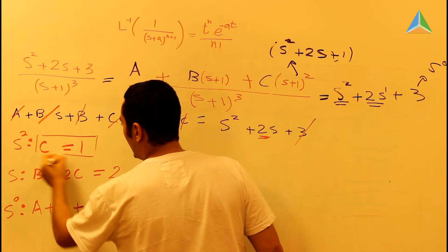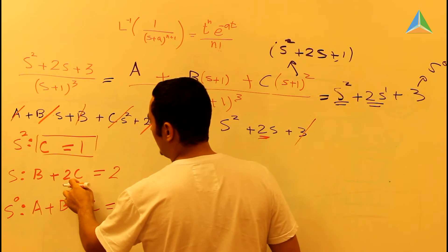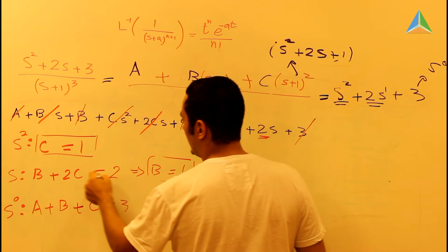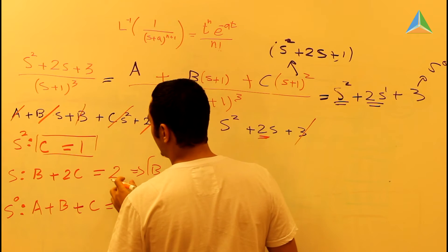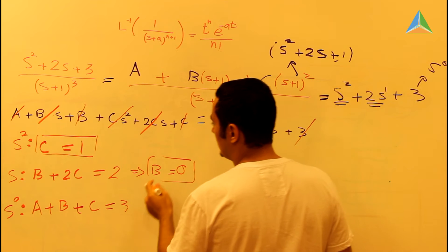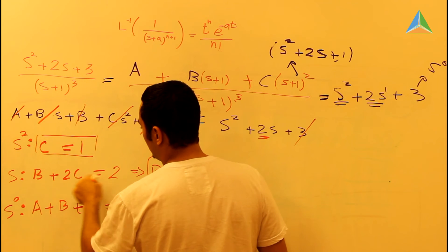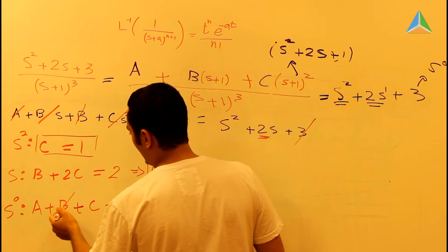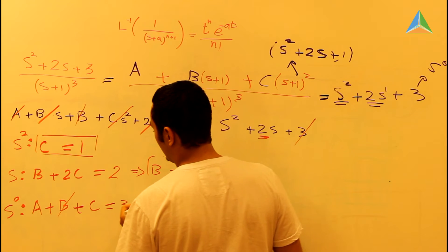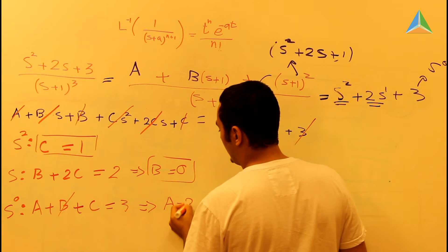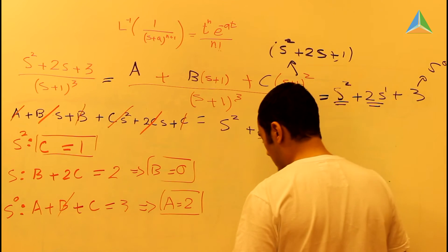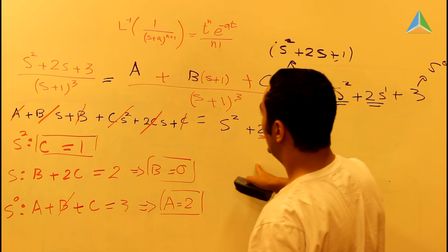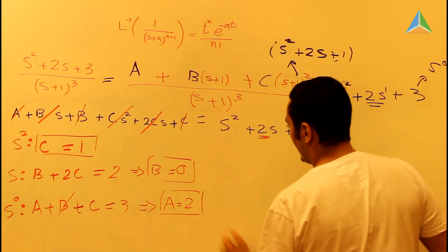So we have C equal to 1. Substituting C into the S equation: B plus 2(1) equals 2, so 2 minus 2 is 0, meaning B equals 0. For the constant term, A plus B plus C equals 3. With B equal to 0 and C equal to 1, we get A equal to 2.